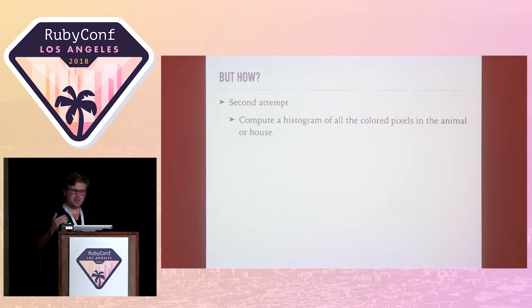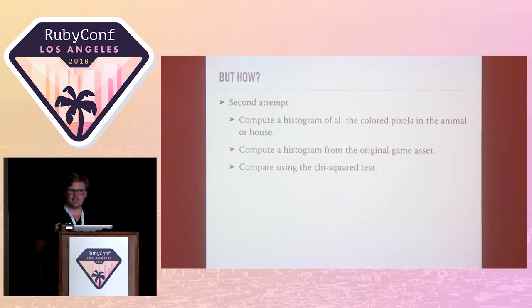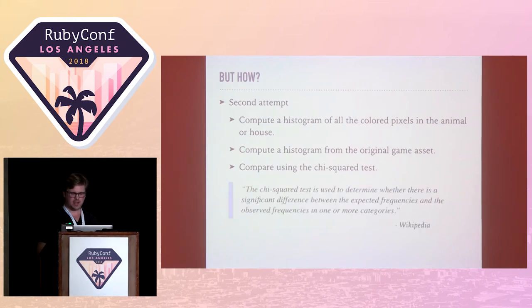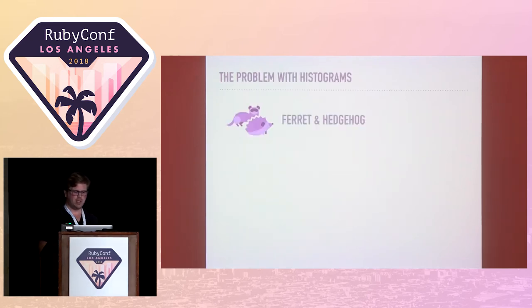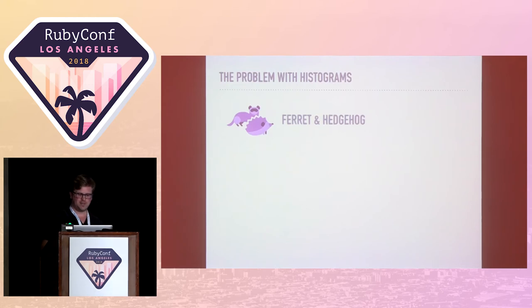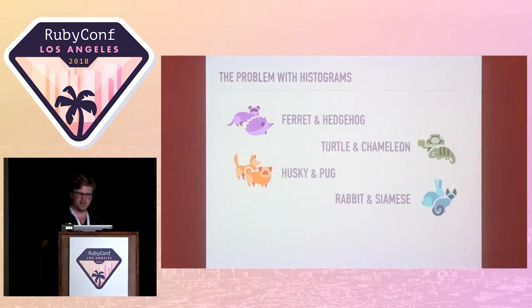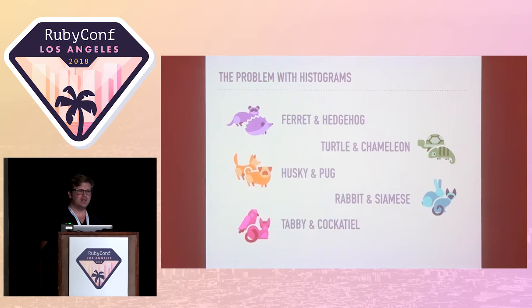The second attempt also used histograms for the colored pixels, and the same game assets, but then used the chi-squared test to compare the two. The chi-squared test, from Wikipedia, is a way to compare differences between two sets of frequencies. This was about 10% better — around 75% accuracy — again just for levels 1 through 12. The problem I kept running into was that at higher levels you get animals that are basically the same color: the ferret and hedgehog are both purple, turtle and chameleon are similar, husky and pug, rabbit and Siamese, tabby and cockatiel. Distinguishing between these was extremely error-prone.